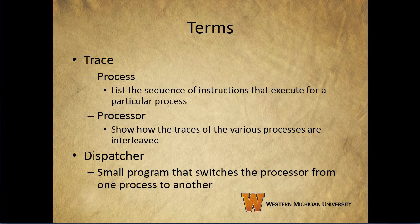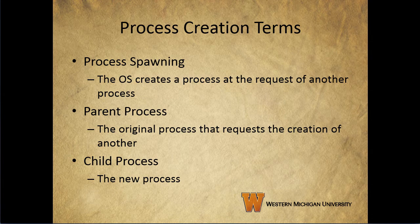The dispatcher is just a little program that switches the processor from one process to another. Process spawning is just the OS creating a process at the request of another process. The parent process is that original process that requests the creation of another, and the child process is the new process itself.